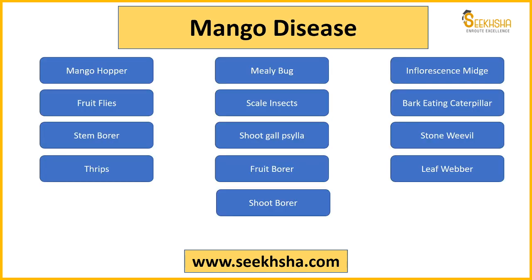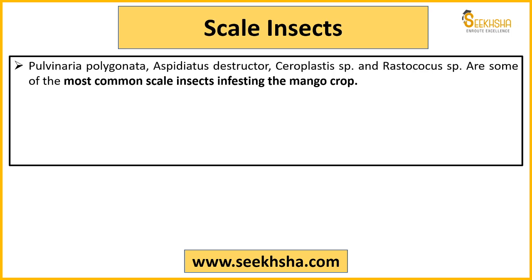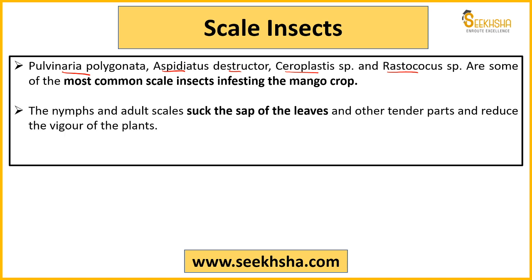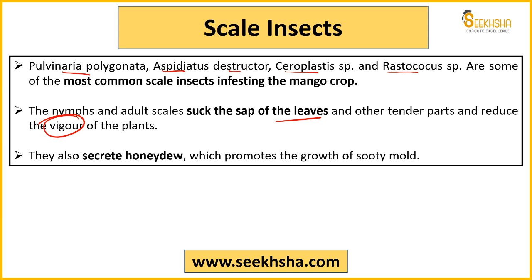Fruit flies ke baad discuss karna hai that is scale insects. Scale insects ki baat karein toh isme bahut saari species aati hain: Pulvinaria polygonata, Aspidiotus destructor, Ceroplastes sp., aur Rastrococcus sp. — yeh sabse common scale insects hain jo mango crop ko affect karte hain. Isme jo nymph ya adult hota hai woh leaves ke sap ko suck karte hain aur jo baaki ke tender parts hote hain phal ke unko yahan par suck karenge, jiski wajah se plant ki strength kam ho jaati hai, uska vigor reduce ho jaata hai. Yeh honey dew bhi secrete karte hain — again sooty mold ki appearance fruit ke upar dete hain.